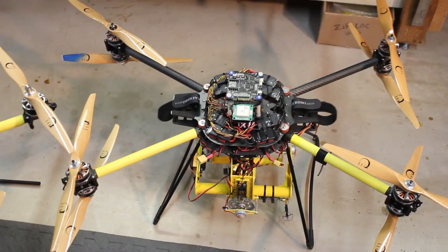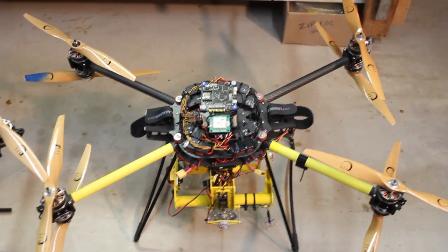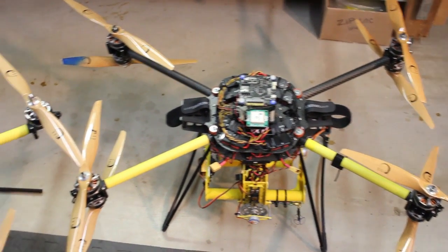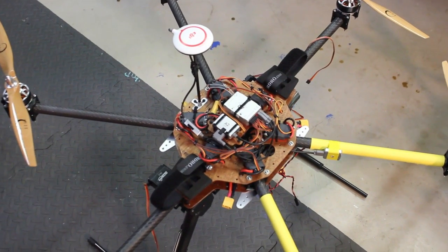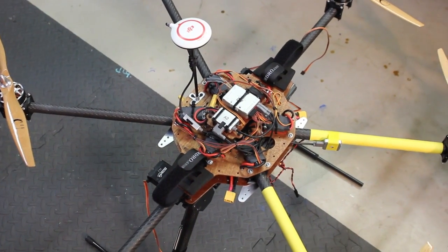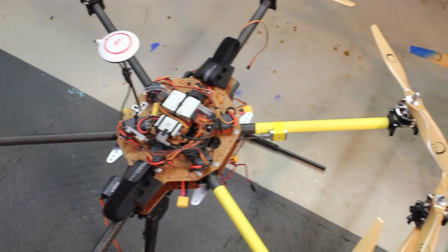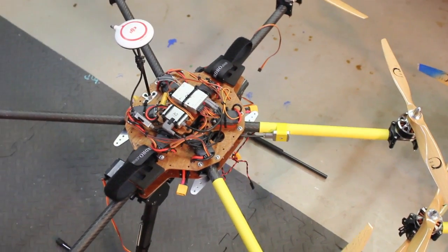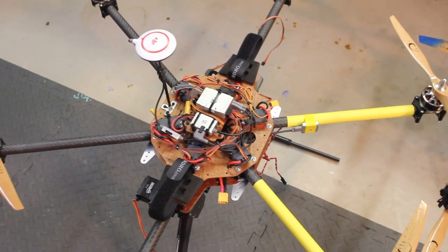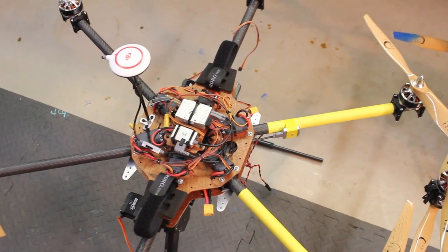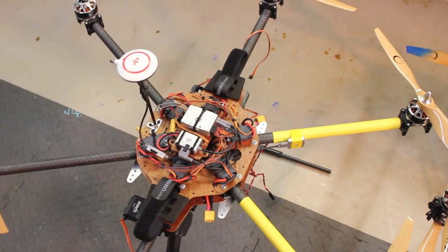I'm taking the motors, ESCs, and frame from this helicopter, going to combine it with the DJI A2 flight control system from this helicopter, and what I'm going to do is make a simple four-motor quad that's going to have a GoPro Zenmuse H3 3D camera mount.